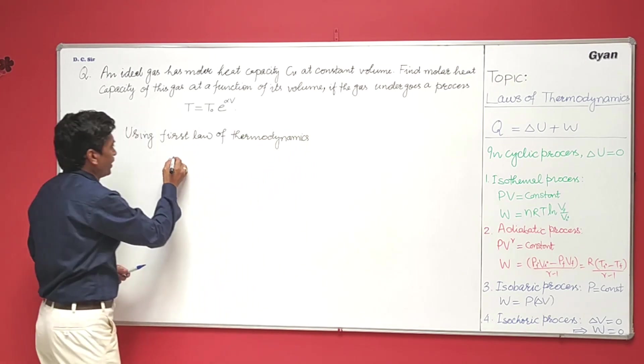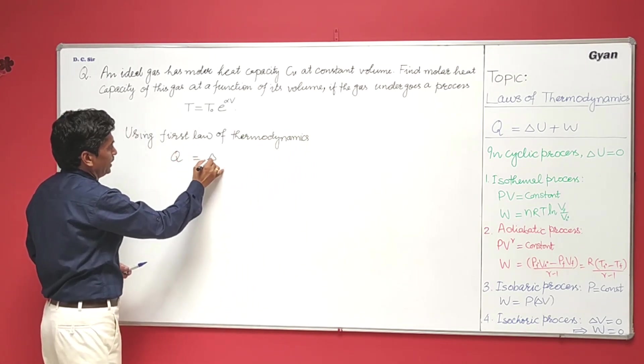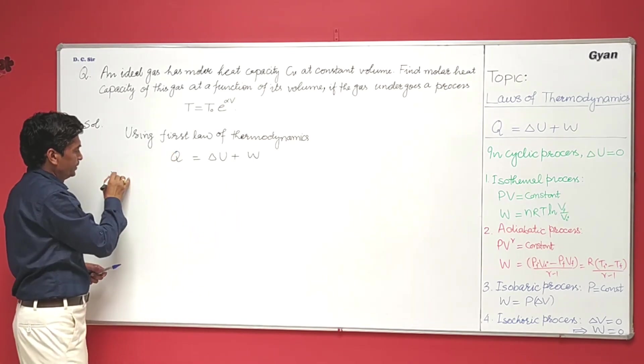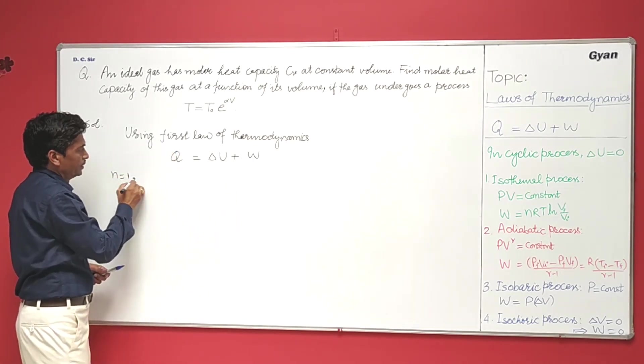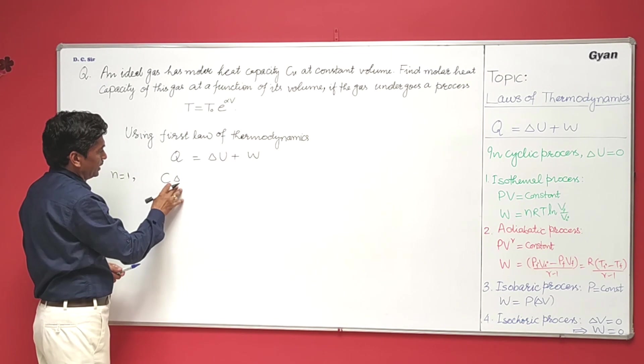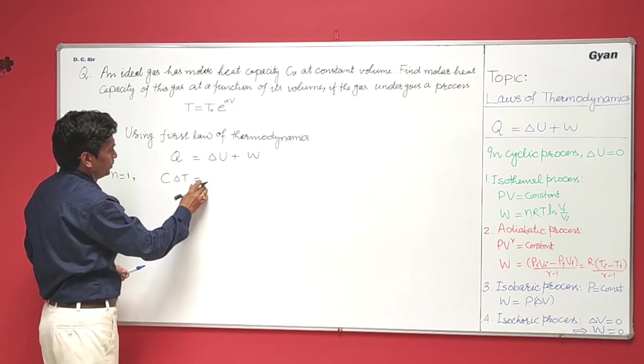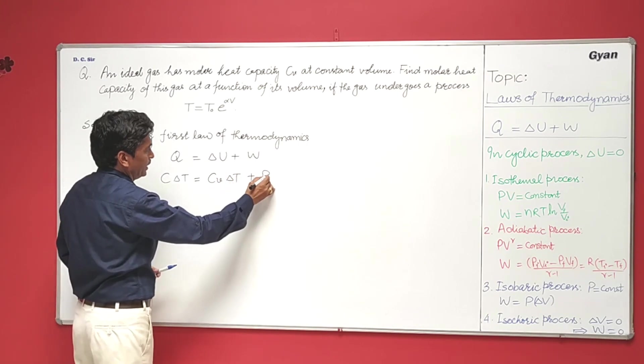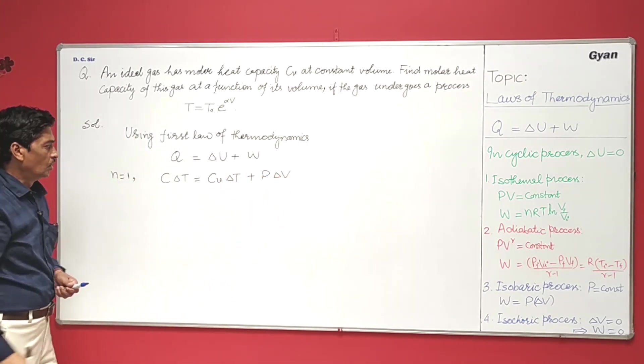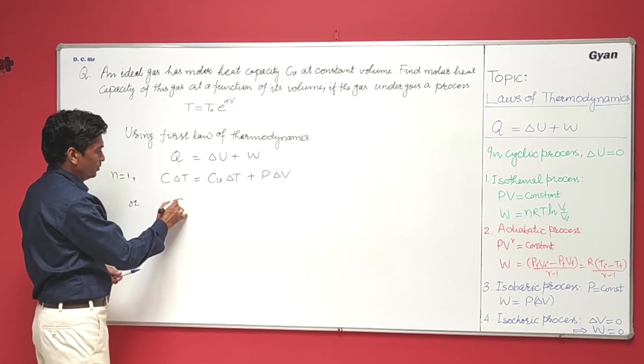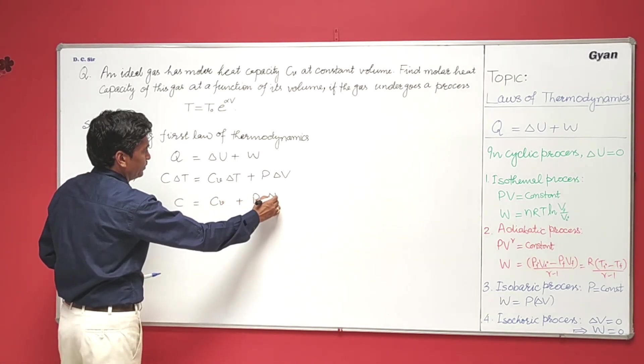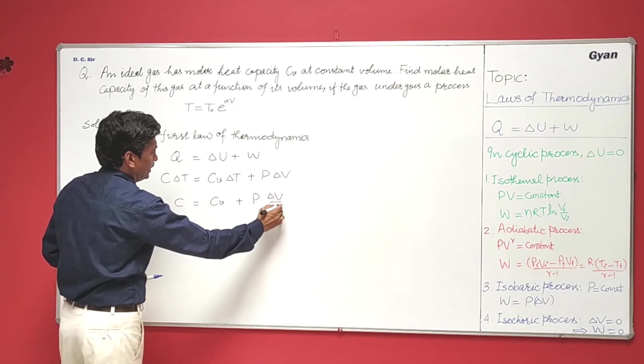We have delta Q equals delta U plus W. For one mole of the gas we can write C delta T equals Cv delta T plus P delta V, or C equals Cv plus P delta V over delta T.